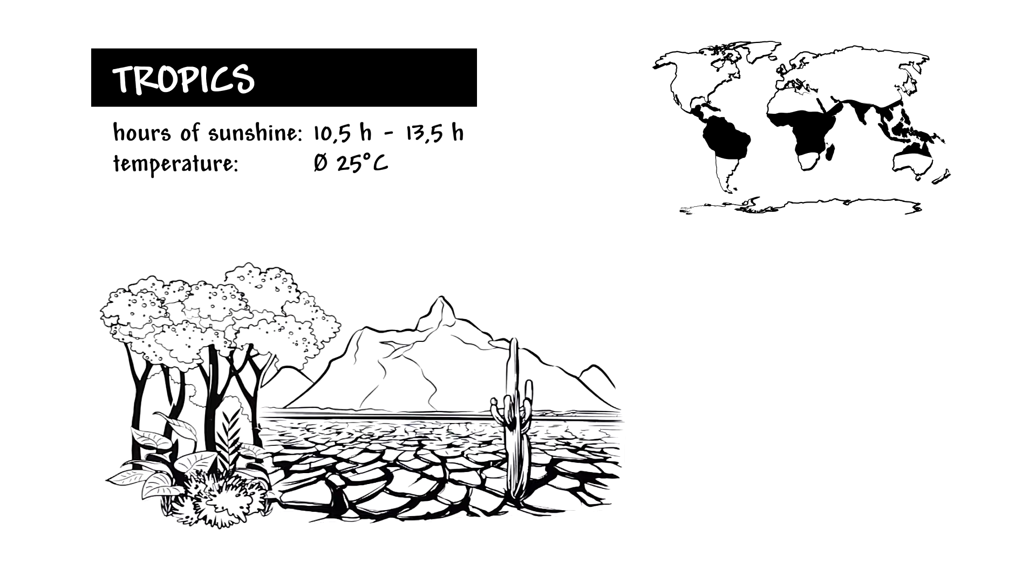Depending on the altitude, temperatures range between 50 and 0 degrees Celsius. The tropics are home to rainforests with lots of precipitation, where plants grow in abundance, as well as extremely dry regions, such as the savannas in Africa.